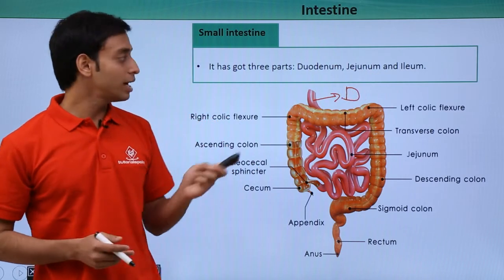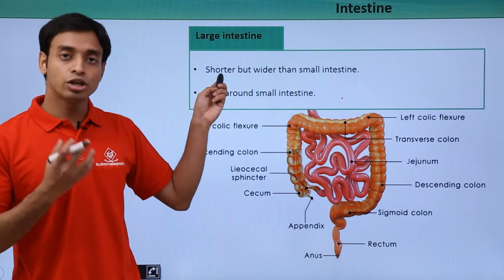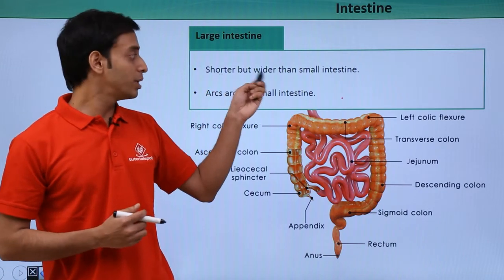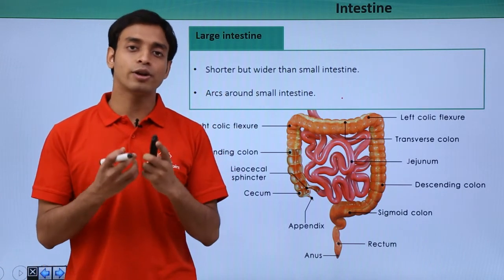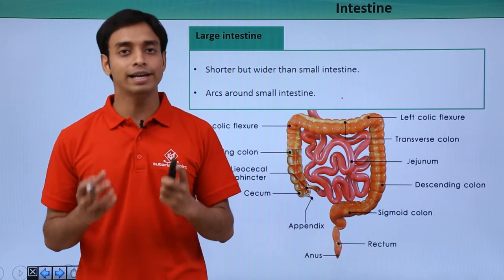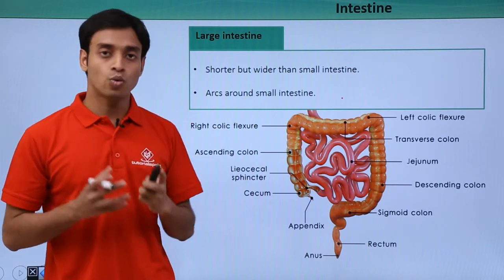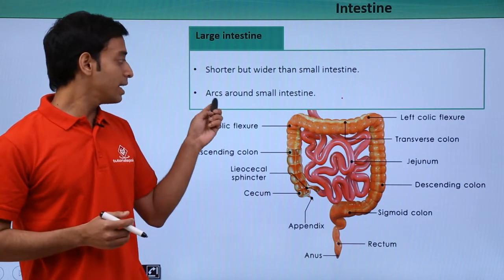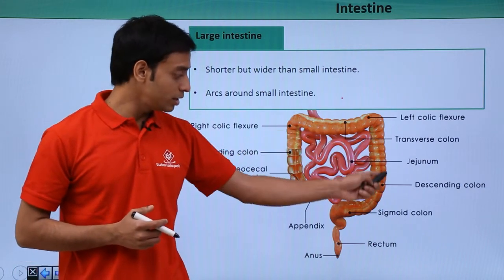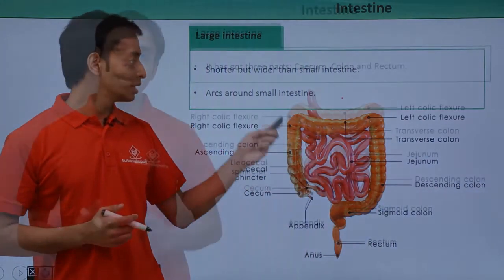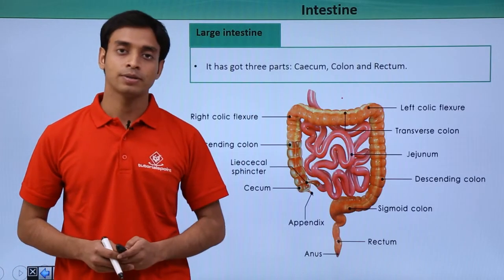The large intestine is shorter than the small intestine but wider. The small intestine is narrow and tubular, whereas the large intestine is a wider structure. The large intestine mostly arcs around the small intestine, as you can see here. It has three important parts: the cecum, colon, and the rectum.